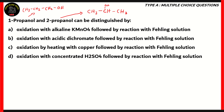1-propanol is attached to one of the carbons at the extreme end of the chain, while 2-propanol attaches itself to the middle of the carbon chain. 'Prop' because there are only three carbon atoms, and 'ol' because of the functional group itself, which is an alcohol. So, how do we distinguish 1-propanol and 2-propanol? We need to oxidize it and then react it with Fehling's solution.